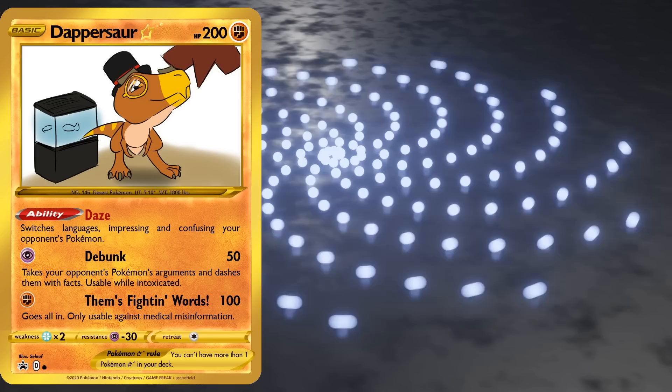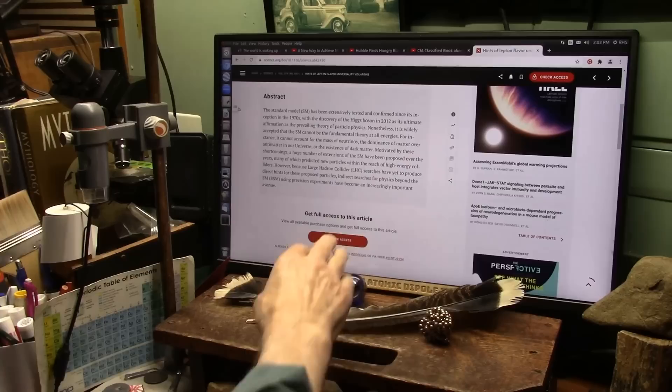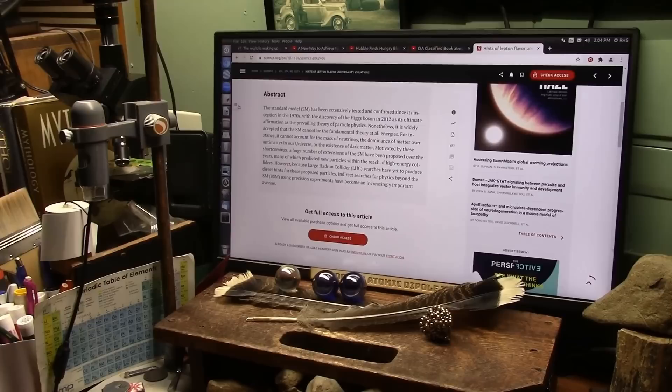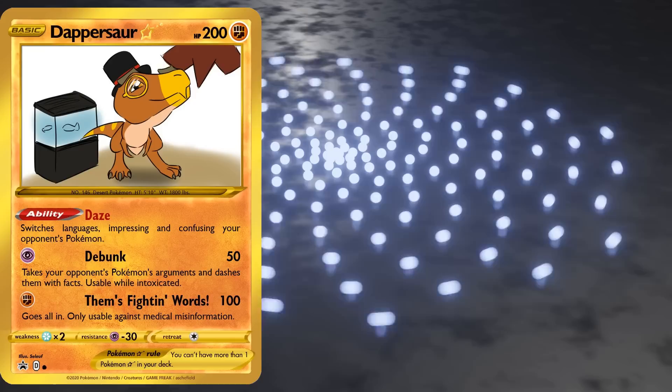So the Large Hadron Collider searches have yet to produce direct hints for the proposed particles. I show you the particles. I'm beginning to think that he actually believes that the magnets on his desk are actual subatomic particles. I mean remember, he, based on his own words, seems to think electrons are half an inch tall.